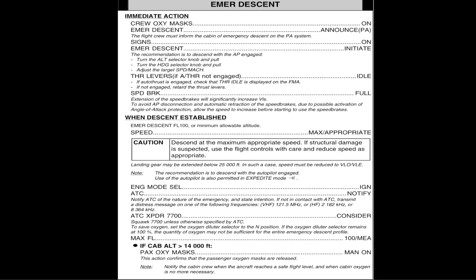Wenn die Kabinenhöhe über 14.000 Fuß ist, fallen automatisch die Masken raus – wobei wir das dann auch nochmal manuell unterstützen, falls das automatische System nicht funktioniert. Allerdings erst dann, wenn wir auf einem Berg von 14.000 Fuß stehen, vorher nicht. Unter 14.000 Fuß können wir noch über eine halbe Stunde locker atmen.